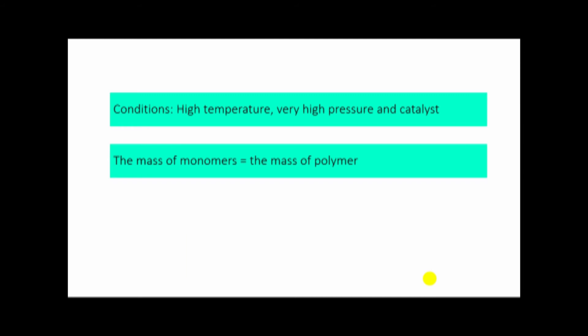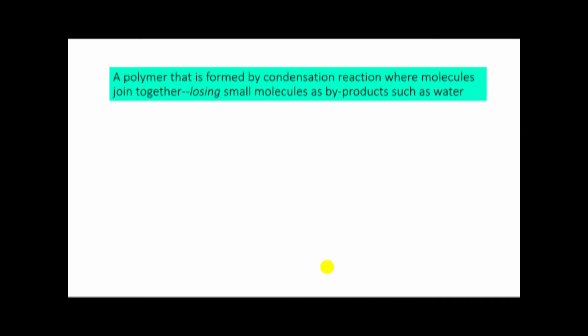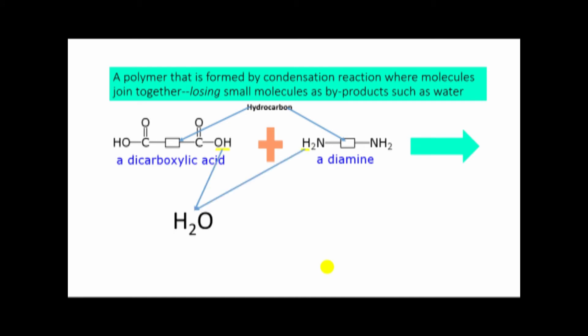Condensation polymerization is where the polymer is formed by condensation reaction, losing small molecules like water or HCl. Here the mass is not equal. For example, dicarboxylic acid is one monomer, another monomer is diamine. These two react and make polymer. Here the box represents hydrocarbons CH2-CH2.